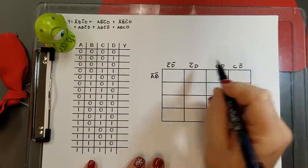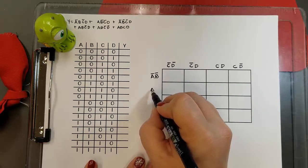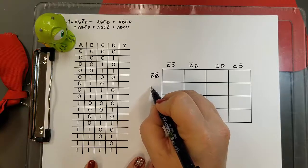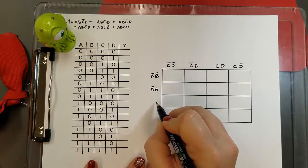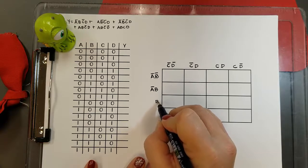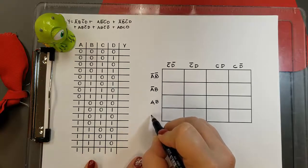I do the same thing going down. I can only change one term every time I move. So I have not A, B. Now I'm going to keep B the same and change A. So that'll be B, not A, changes to A, right? And then we have A, not B.